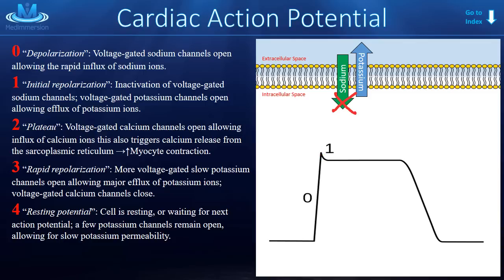Next, in phase two, calcium channels begin to open. Calcium is also positively charged, so positive things coming into the cell would make it more positive. But potassium is still moving out, making the cell more negative. Hence, you get this plateau phase — it kind of balances out, not exactly flat but close. We still call it the plateau phase.